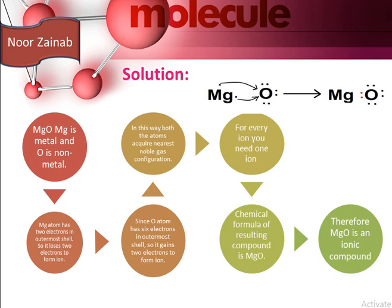In magnesium oxide (MgO), magnesium is a metal and oxygen is a non-metal. Since magnesium has two electrons in its outer shell, it loses two electrons to form an ion. Oxygen has six electrons in the outer shell, so it gains two electrons to form an ion. Both atoms acquire the nearest noble gas configuration. For every Mg²⁺ ion you need one O²⁻ ion, giving the chemical formula MgO — therefore MgO is an ionic compound.